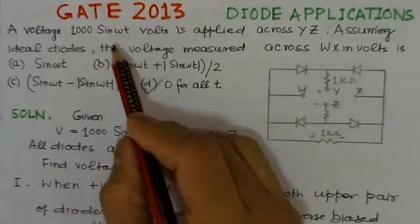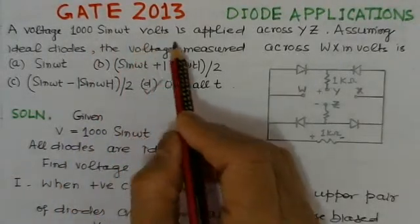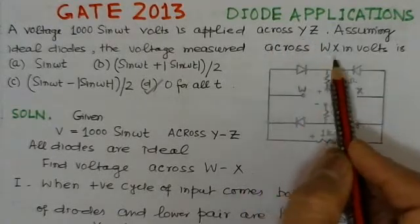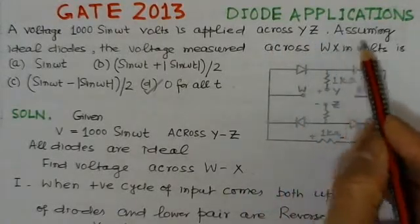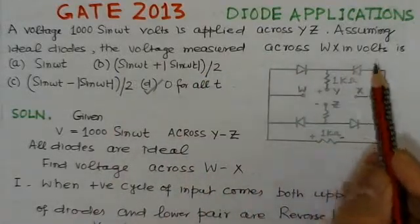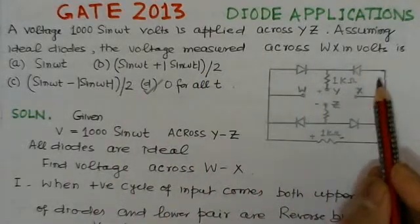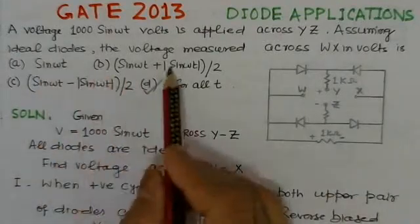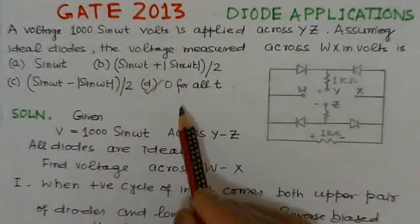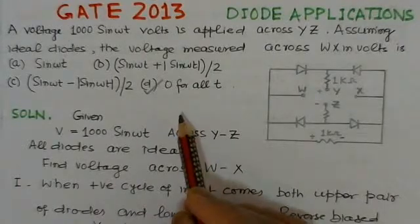Here, a voltage 1000 sin ωt volts is applied across YZ. Assuming ideal diodes, the voltage measured across WX in volts is, there are four options given here and we have to see which is the right option here for this problem.